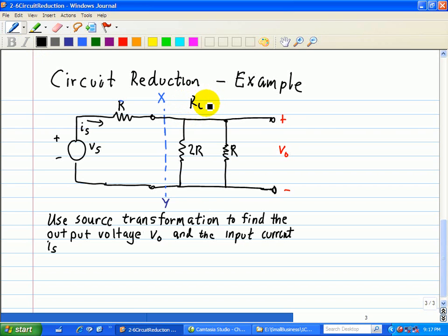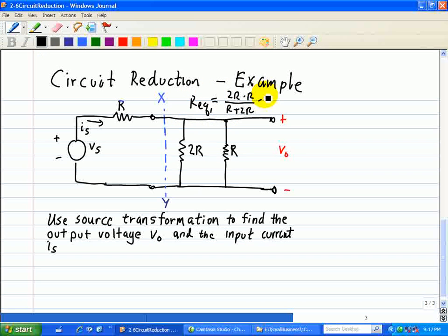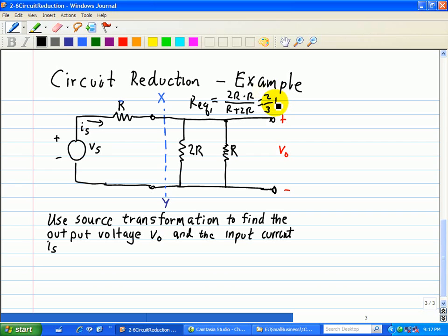So we can say that this equivalent resistance for this case here, R equivalent for the first case, is just 2R times R over R plus 2R, which is just equal to two-thirds R.